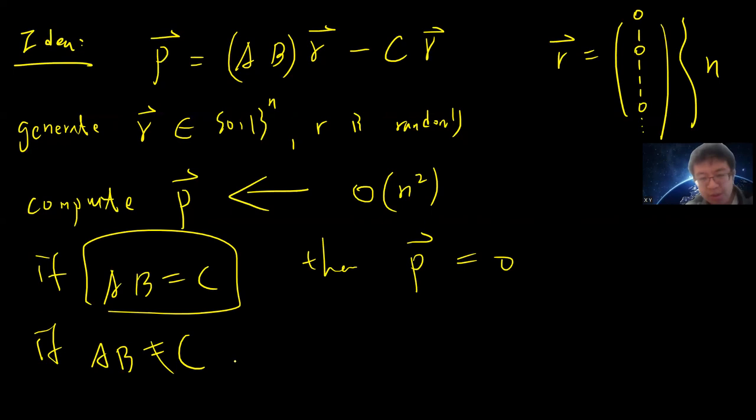And if AB does not equal C, then you have high probability that P is not zero. So what this means is that if AB does not equal C, then probability of P equals 0 is less or equal to half.